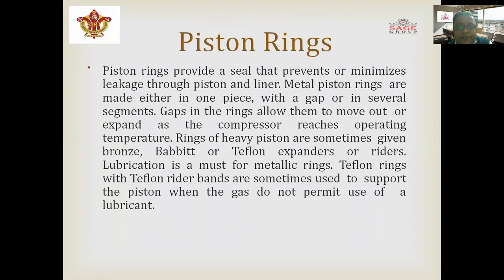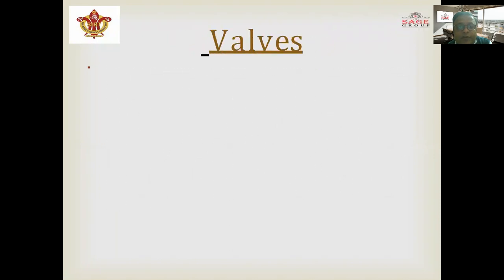Piston rings provide a seal to prevent or minimize leakage between the piston and the liner. Metal piston rings are made either in one piece with a gap or in several segments. Gaps in the rings allow them to expand as the compressor reaches operating temperature. Rings of heavy pistons are sometimes made with bronze, babbitt, or Teflon expanders or riders. Lubrication is a must for metallic rings. Teflon rings with Teflon rider bands are sometimes used when lubricant is not permitted.